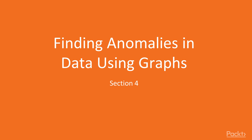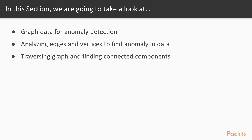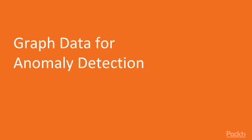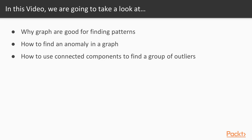This is the fourth section of our finding anomalies in data course. In this section we'll be looking at ways to find anomalies in data using graphs — graph data for anomaly detection — because graphs are a perfect structure to model networks or behaviors and find anomalies in them. We want to answer why graphs are good for finding patterns, how to find anomalies in a graph, and how to use connected components to find a group of outliers.